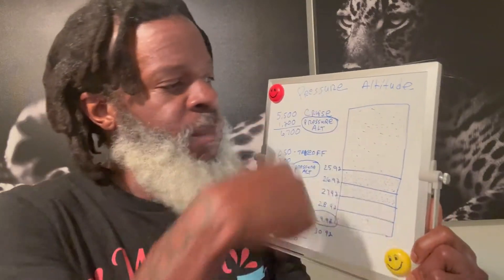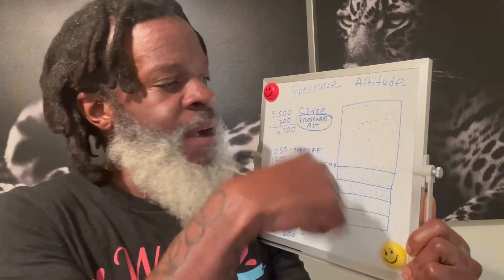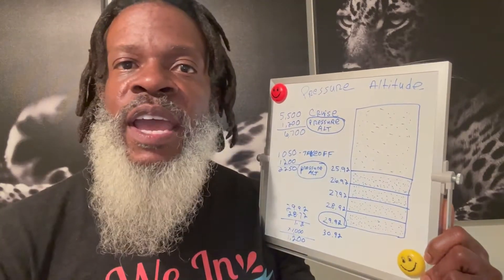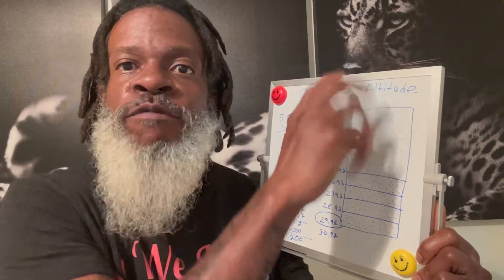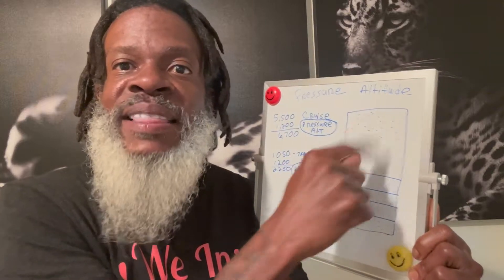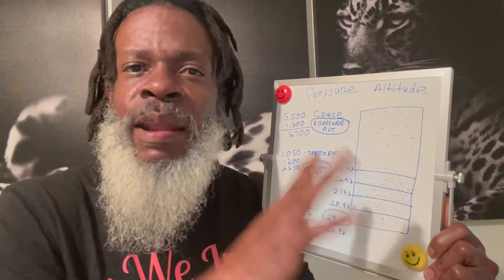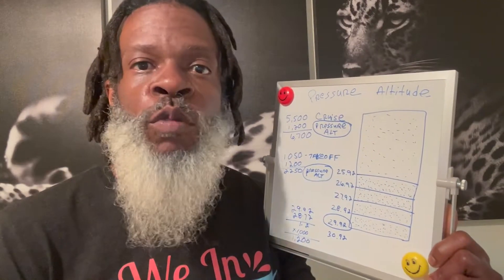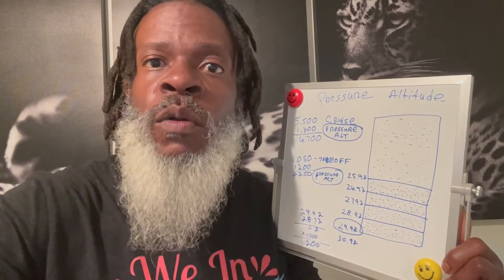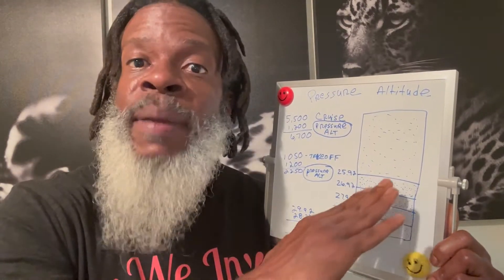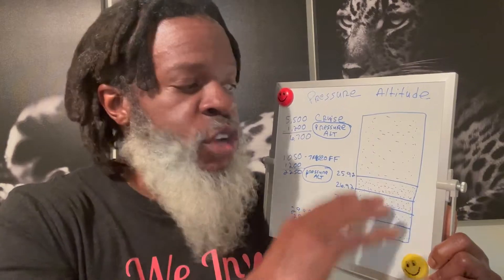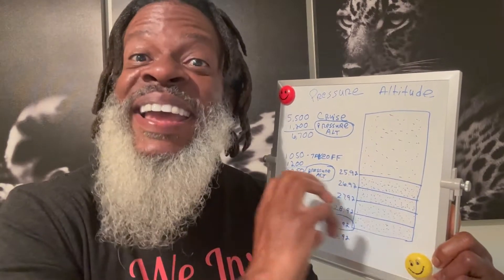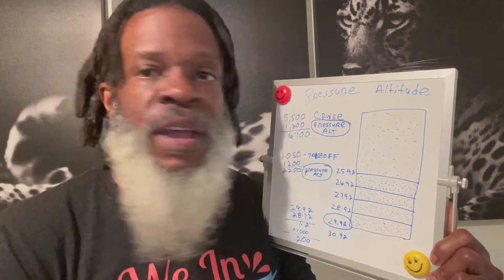When you think about pressure altitude, just think about our entire atmosphere and all the air molecules floating around up in it. As those molecules float around, gravity is pulling down on a lot of them, so the ones down at the bottom at the lower levels are going to be the ones more affected. Everything is a lot thicker and denser there, while it gets thinner as you go up.